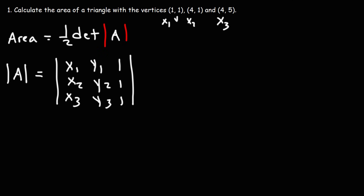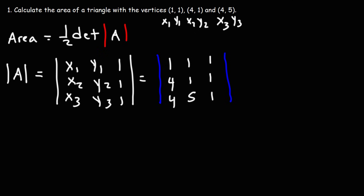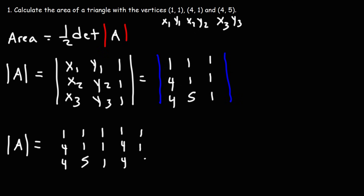In the third column we have three ones. So this is x1, x2, x3 and y1, y2, y3. Let's replace the x and y values. In the first column the x values will be 1, 4, and 4. The y values will be 1, 1, and 5, and in the last column just three ones. To evaluate the determinant of that 3 by 3 matrix, we write the first column 1, 4, 4 and then the second column 1, 1, 5.